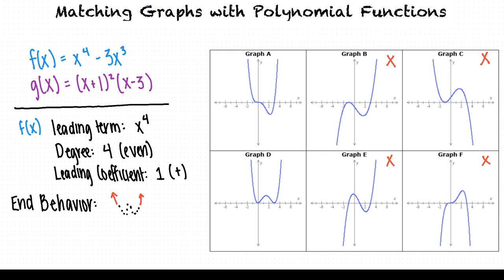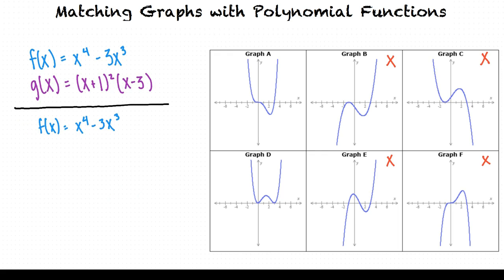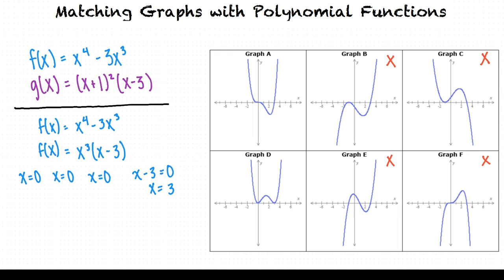Next, to determine if our function corresponds to graph A or graph D, we'll find the zeros of f(x) by factoring. The two terms in our function have a common factor of x cubed, so we'll pull an x cubed out of each term. Next we set each factor equal to zero. This leaves us with x equals zero, which has a multiplicity of three, and x equals three, which has a multiplicity of one.